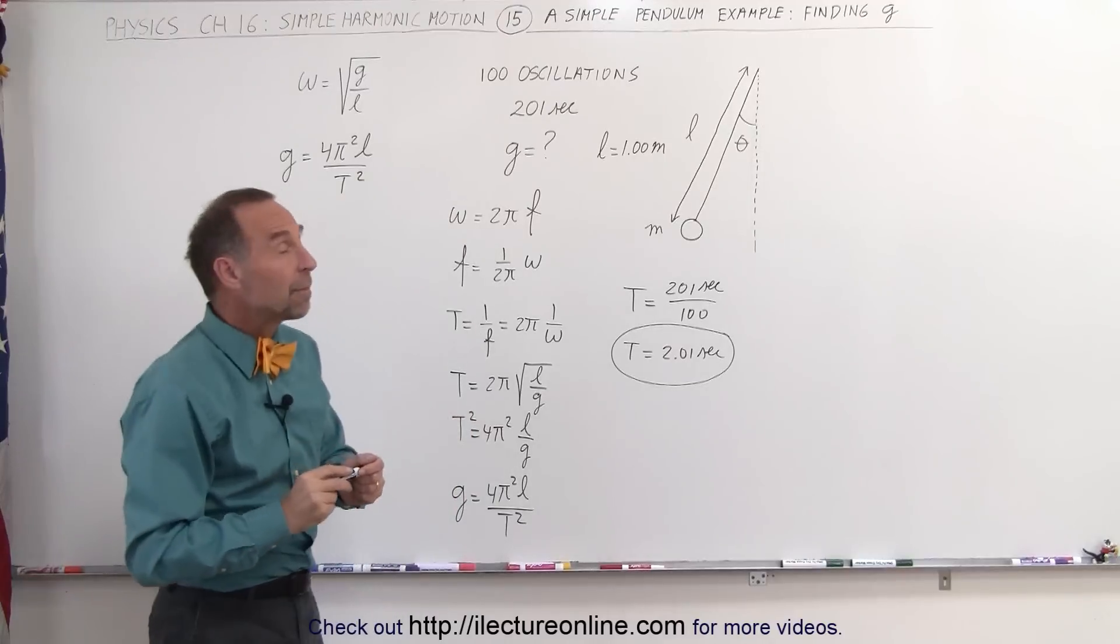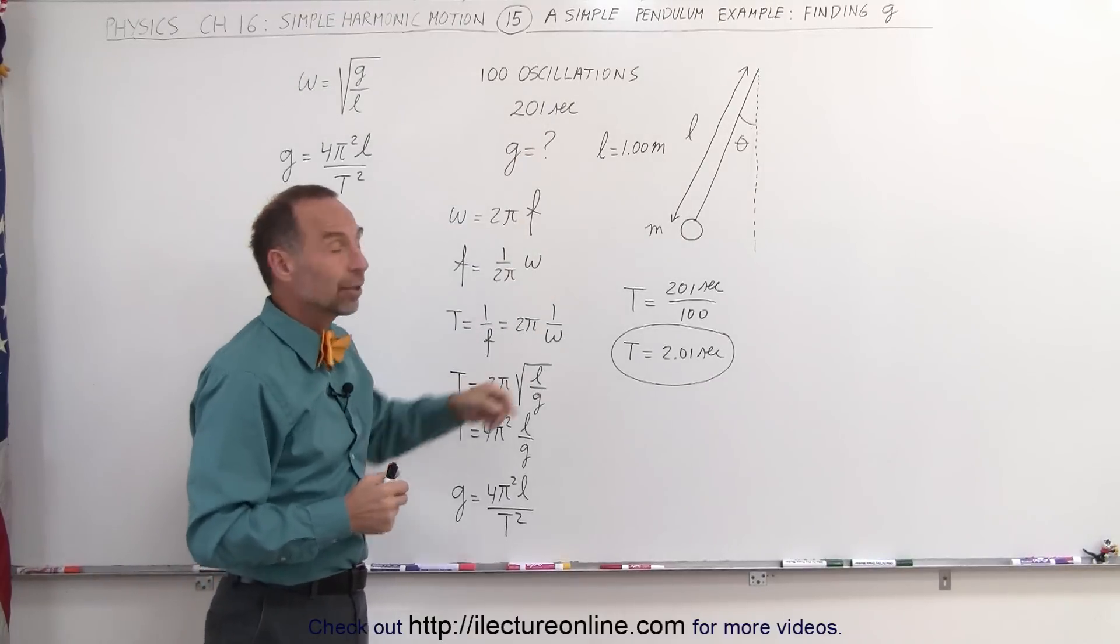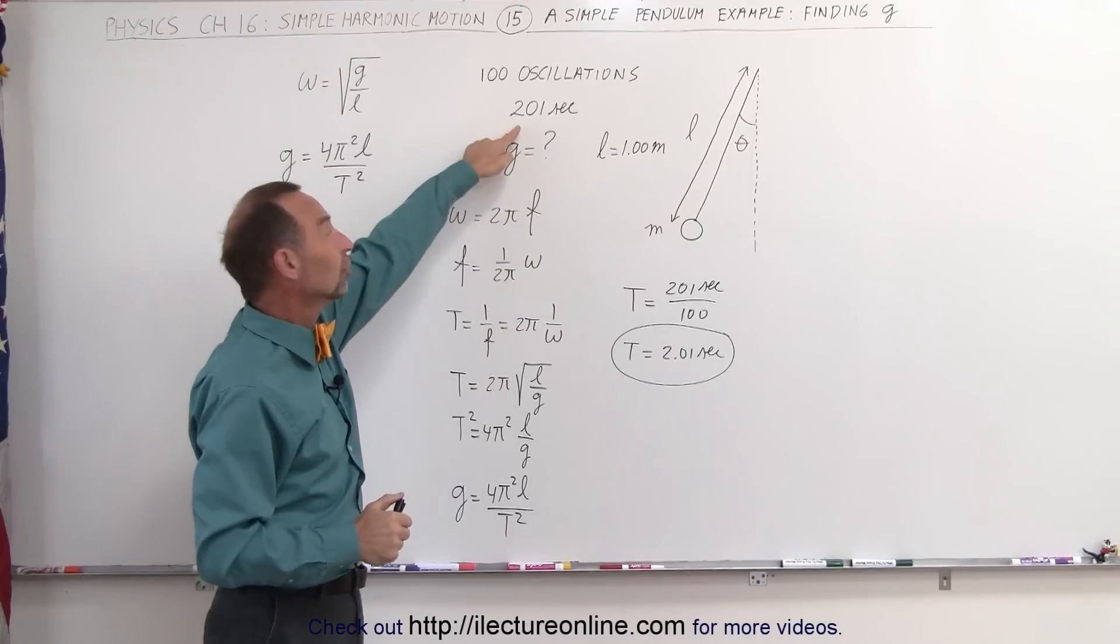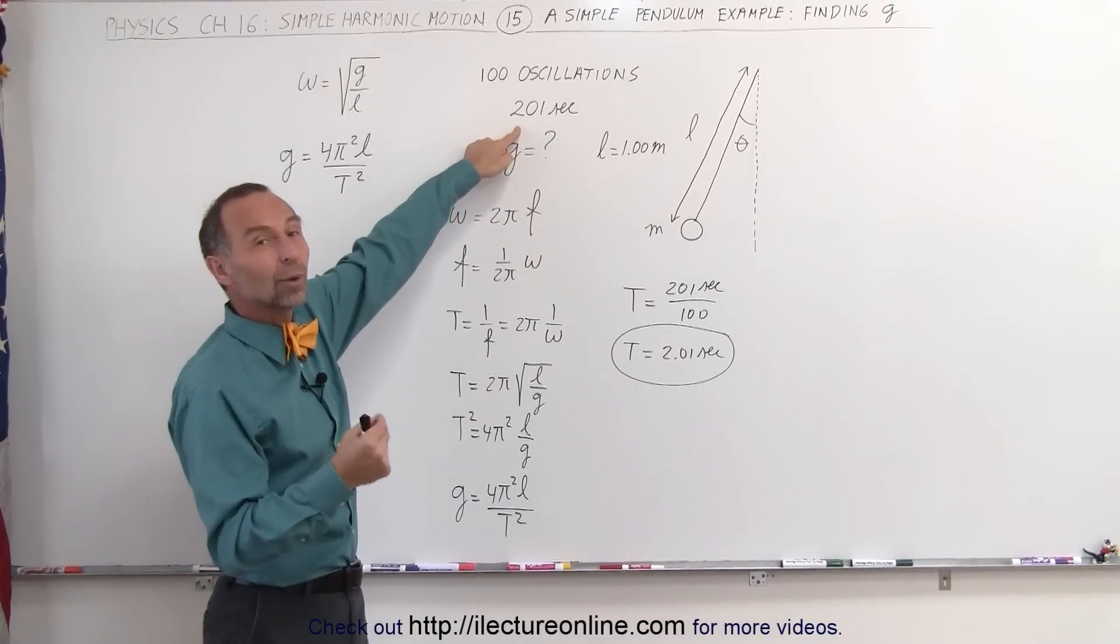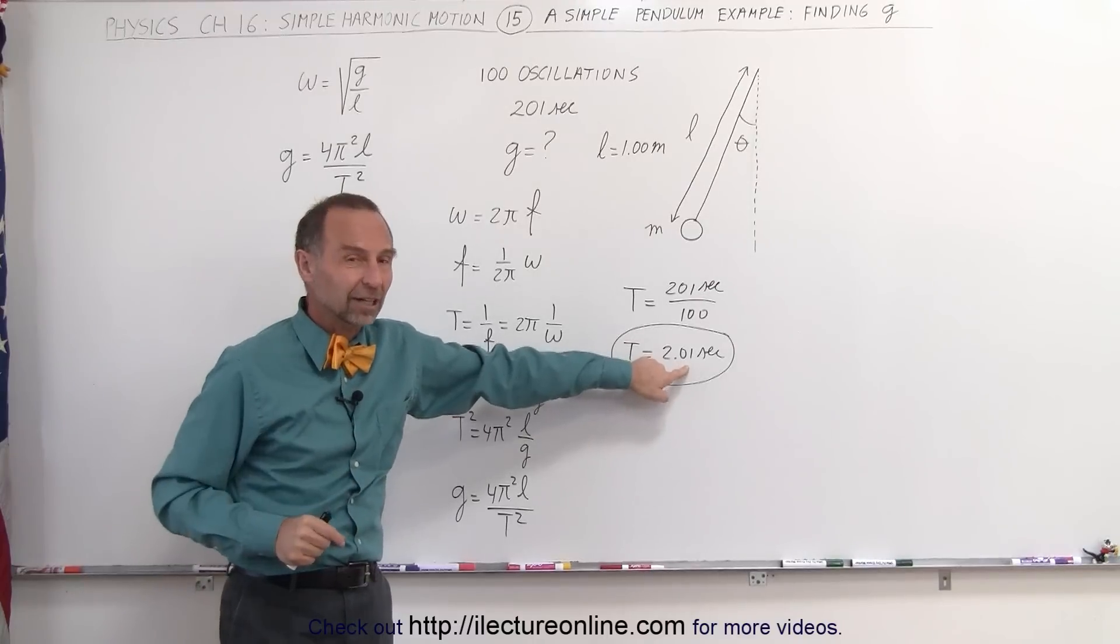Notice the reason why we measure so many oscillations is then the error in our measurement for the time and the period. The time for a single period is much smaller. It's much easier to measure 100 oscillations to the nearest one second than to try and measure a single period to the nearest one hundredth of a second.